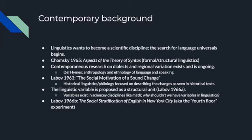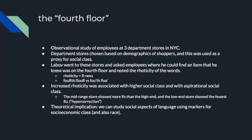One of the more pivotal studies was also from 1966: 'The Social Stratification of English in New York City,' also known as the fourth floor experiment. It was an observational study of employees at three different department stores in New York City. These stores were chosen based on the demographics of the shoppers, used as a proxy for socioeconomic class. The most expensive store represented upper middle class, the mid-range store for middle class, and the low-range store for lower middle class and working class. Labov went to these stores and asked employees where he could find an item he knew was on the fourth floor, and noted the rhoticity of their words.